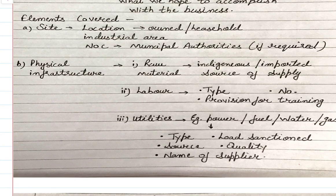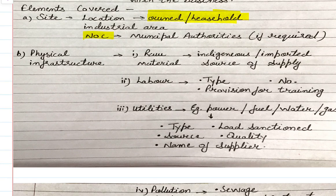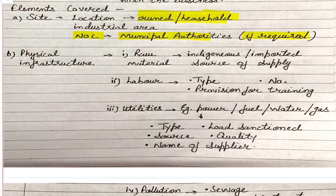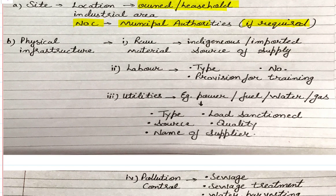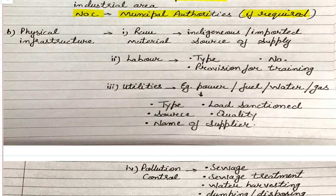Within the business venture component, the site is described — its location, whether you are the owner or it is leasehold, which industrial area it is part of, whether NOC has been obtained from municipal authorities or how and when it will be obtained. Under physical infrastructure, the first element is raw material — whether your raw material will be indigenous or imported. If imported, you need to provide sources of supply, and if indigenous, you also need to state the source of supply.